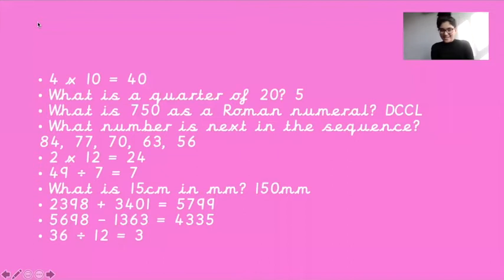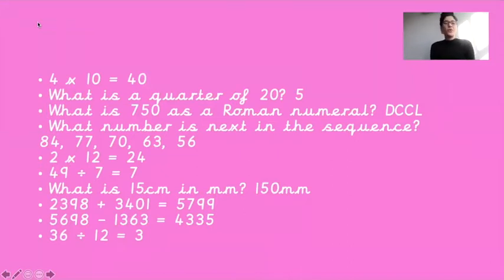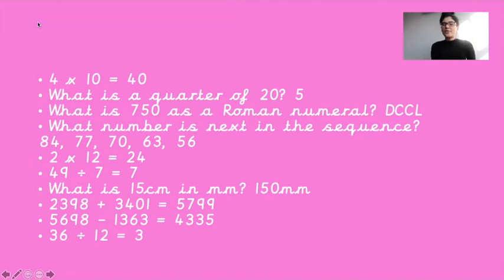The answers to our arithmetic then are as follows. 4 times 10 equals 40. What is a quarter of 20? 5. What is 750 as a Roman numeral? DCCL.